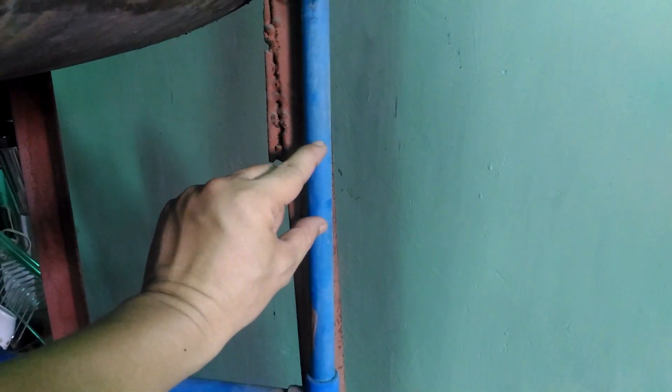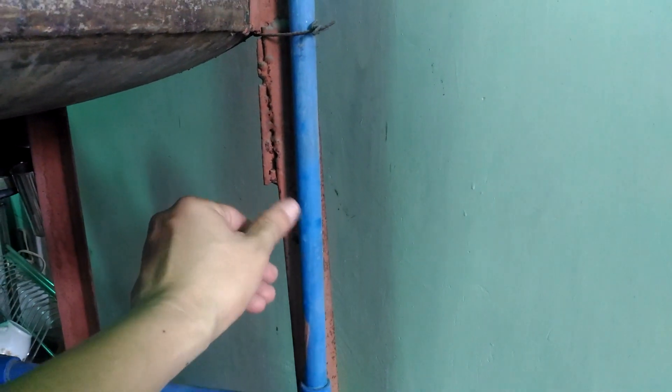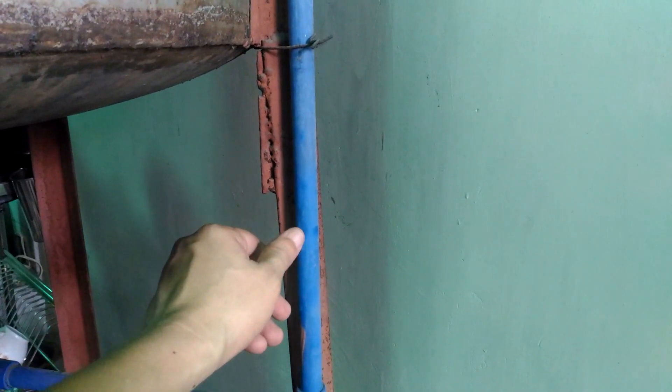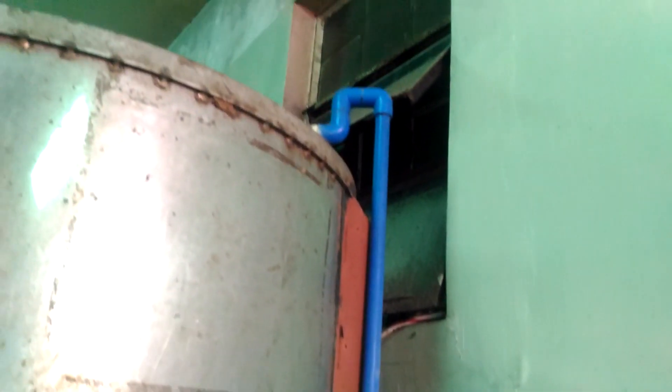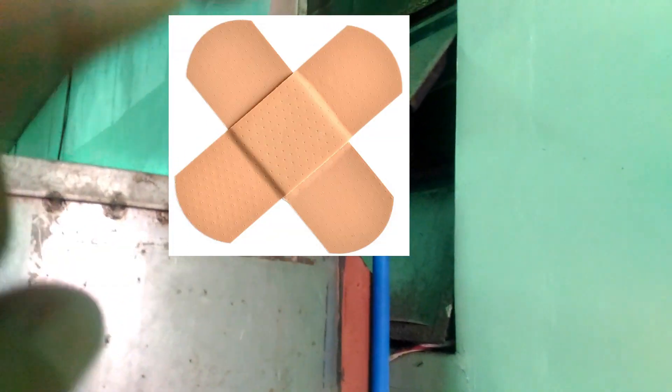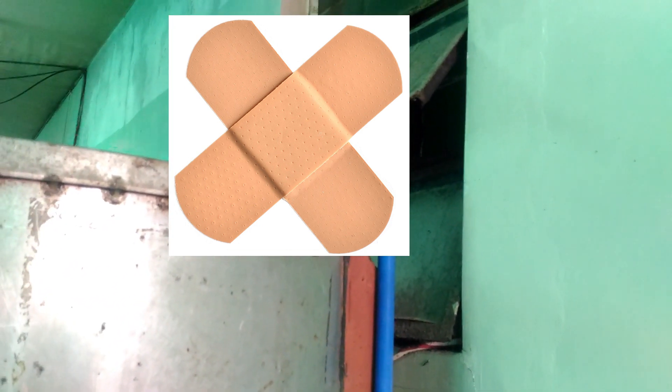While we're at it, I would also like to install a failsafe mechanism that's within easy reach in case of emergency. This will allow me to shut off the water supply going up the tank so I can take my sweet time fixing or replacing the valve without having to shut off our main water valve.